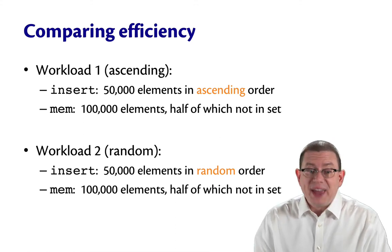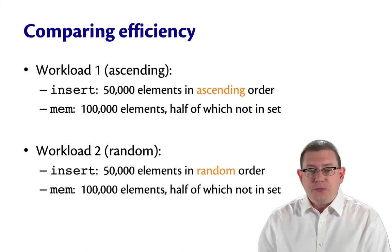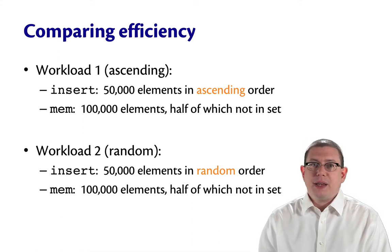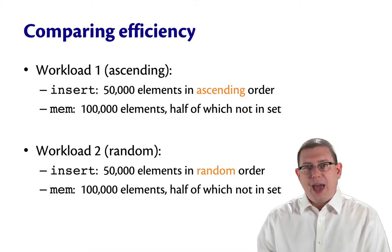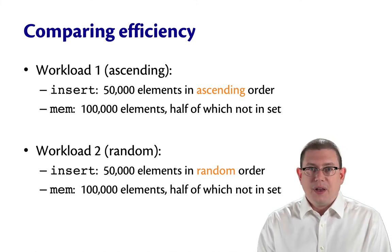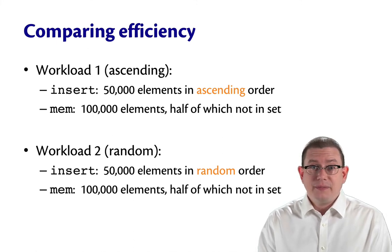Workload 2 is going to be random. I'm going to insert 50,000 different elements in a completely random order. And then I'll again do 100,000 membership tests, half of which will be for elements in the set, half of which will be for elements not in the set.